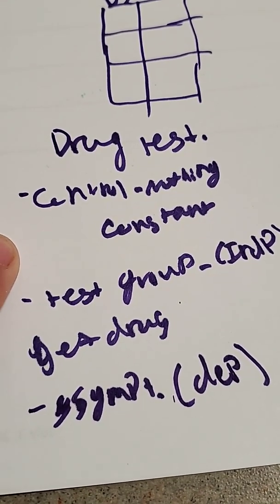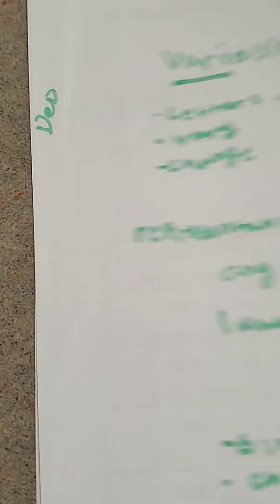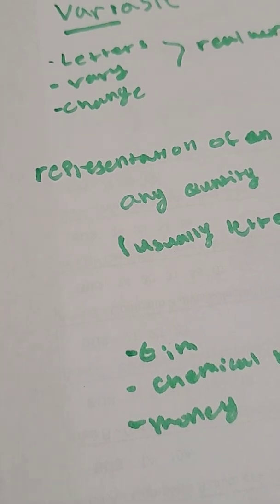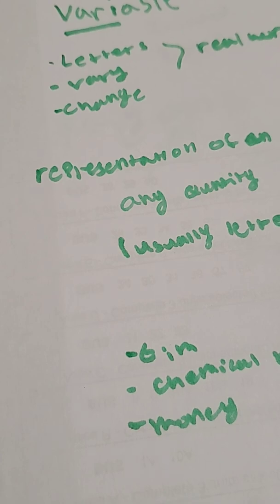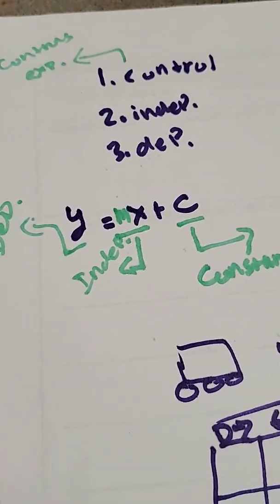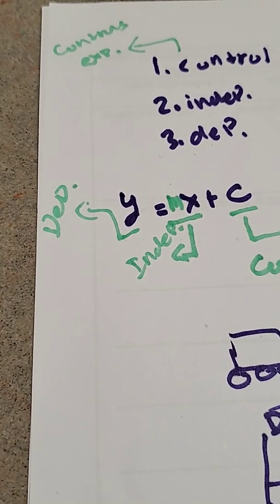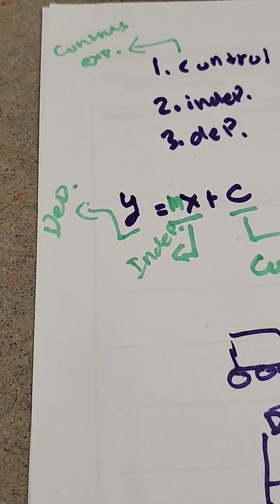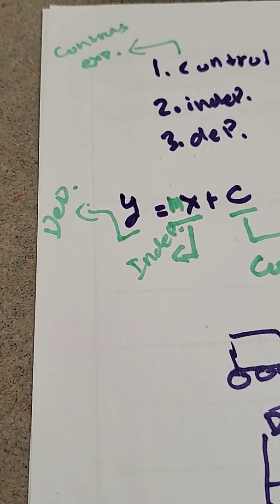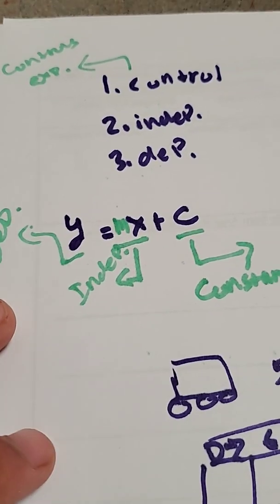Before we end the video, let's have a quick recap. A variable is a representation of any quantity, typically denoted with letters, and we see them in sciences and mathematics — in equations, money, chemical reactions, time, and especially word problems. There are three types: control variables stay the same, independent variables change, and dependent variables rely on the independent variable. I hope this helps — see you guys next video!